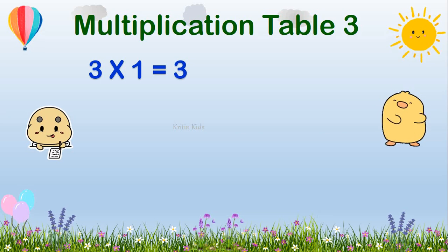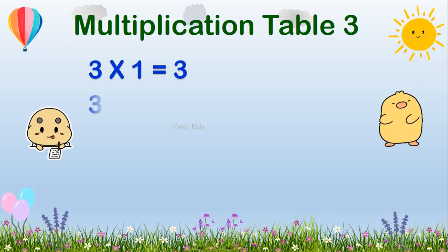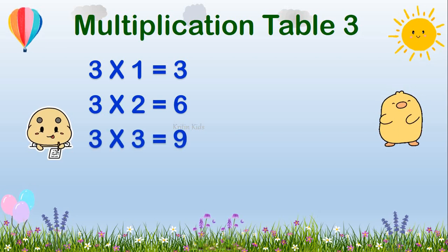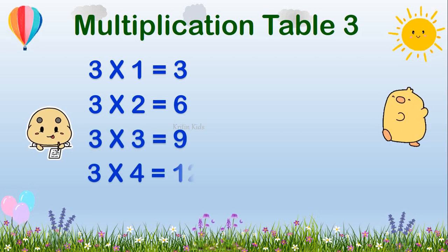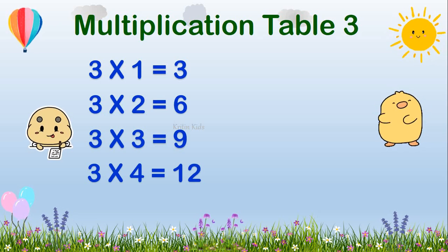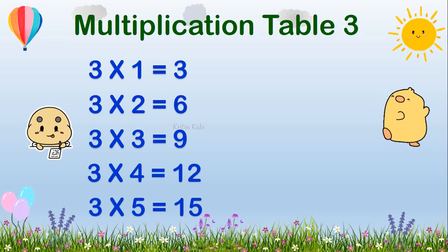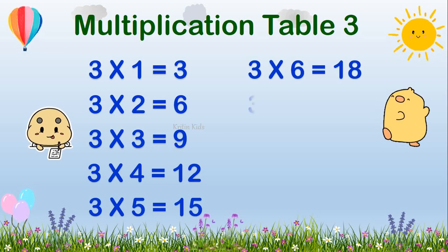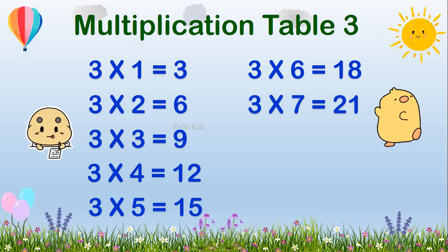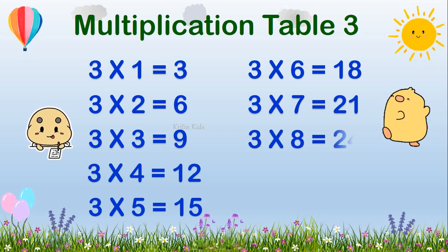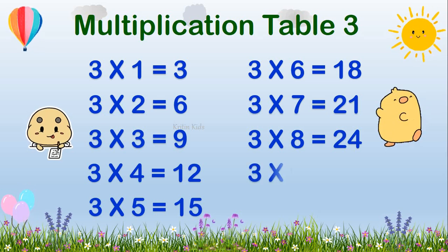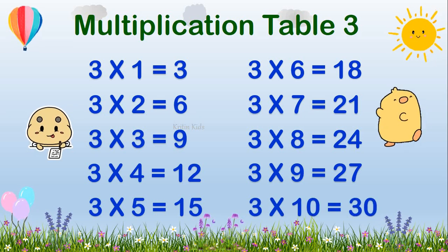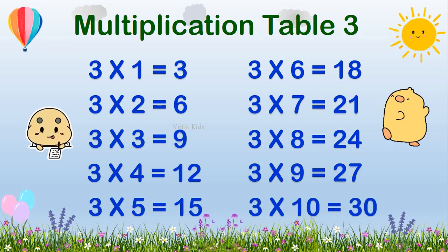Three, one's are three. Three, two's are six. Three, three's are nine. Three, four's are twelve. Three, five's are fifteen. Three, six's are eighteen. Three, seven's are twenty-one. Three, eight's are twenty-four. Three, nine's are twenty-seven. Three, ten's are thirty.